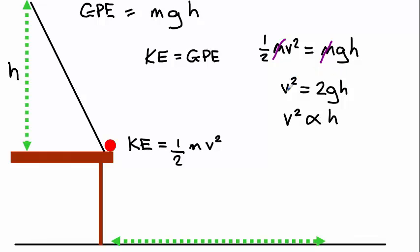So if I change h, v squared will change. If I change v squared, h will change.